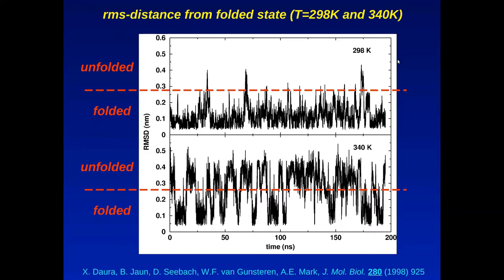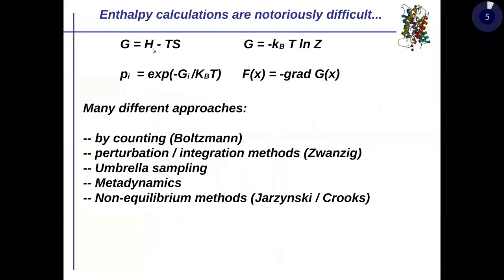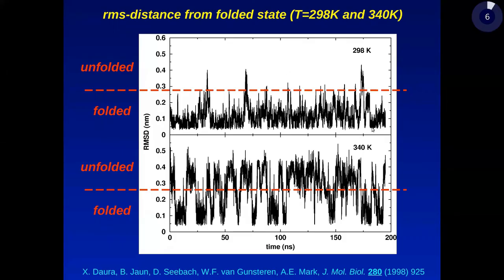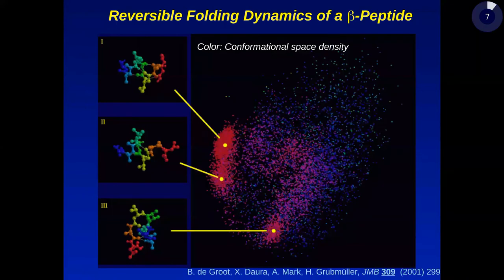We also see the effect of temperature: changing the temperature shifts the free energy balance more toward the unfolded state — we increase the entropy contribution by raising T, shifting the ΔG. So we can go back to the thermodynamic relation: ΔG = ΔH − TΔS. We considered the difference between two states and shifted it.